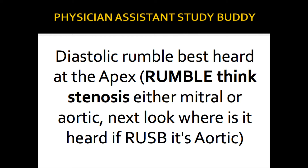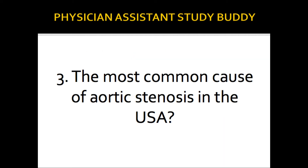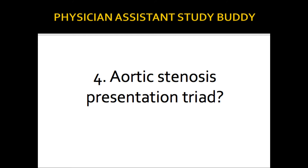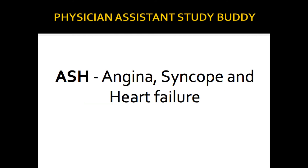Mitral stenosis is a diastolic rumble best heard at the apex. I think about stenosis — either mitral or aortic — and then look at location. If it's at the right upper sternal border, it's aortic. The most common cause of aortic stenosis in the United States is calcified aortic stenosis due to aging.